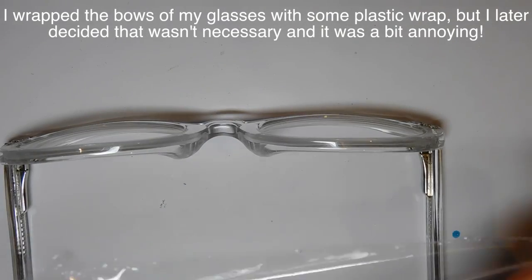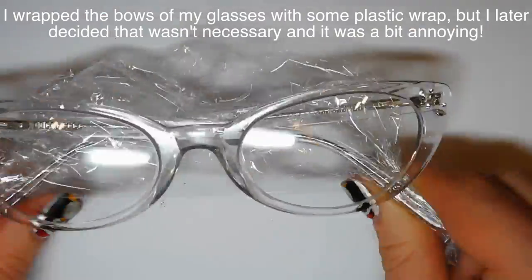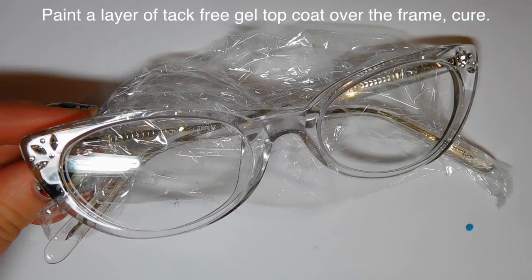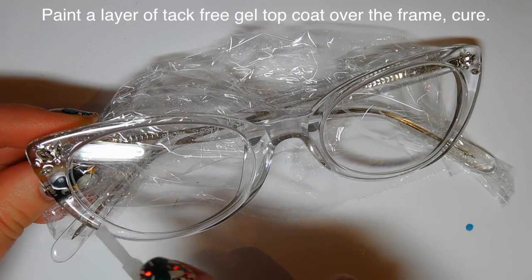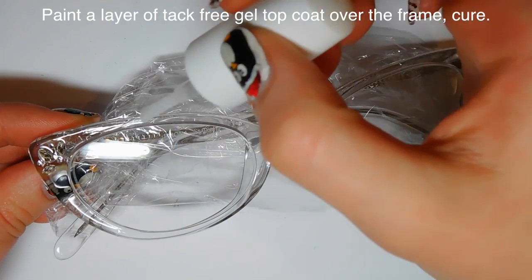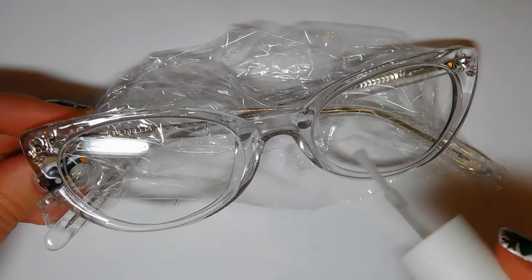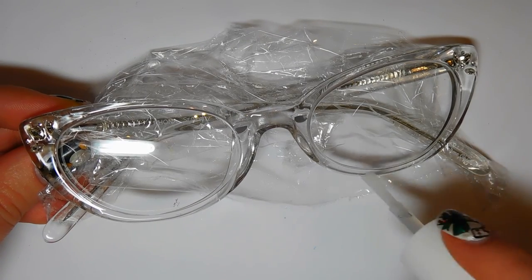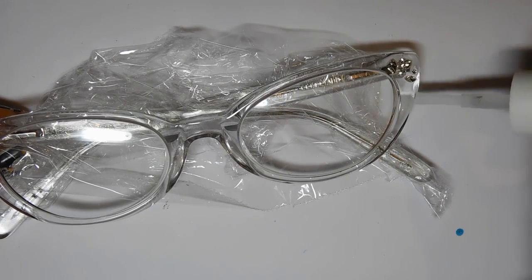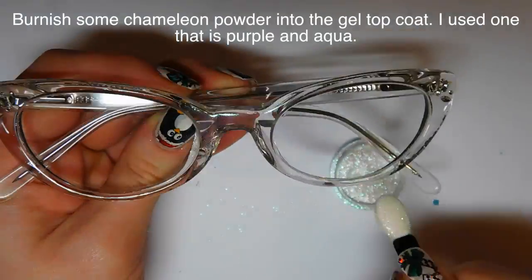So the first thing I did which I later decided was utterly unnecessary is that I wrapped the bows in some saran wrap so that while I worked on the front of the frames I won't get any product on them. But I decided that I'm really not that messy and that I wasn't gonna get product on them anyway, so just ignore that stuff because it's more annoying than anything. So the first thing you want to do is to make that mirror powder background. I put on a layer of some no-wipe gel topcoat just over the clear frames and I didn't do the inside of the frames but pretty much everywhere else and I just started on the front.